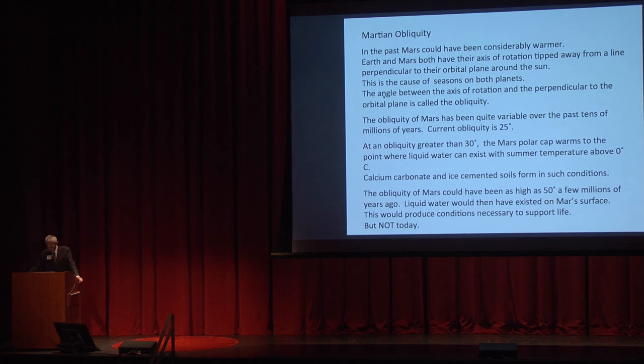At an obliquity of 30 degrees, meaning that the pole would be tipped more towards the sun, the polar regions could warm to a temperature above 0 degrees Celsius, 32 degrees Fahrenheit, so there could be liquid water on the surface of Mars. Calcium carbonate, these hydrated salts that we found on Mars, would form in such conditions. There's some evidence that the obliquity of Mars a few million years ago was as much as 50 degrees, which would have meant that the north pole is pointing much more directly towards the sun, and the whole region way down from the polar regions could be warm enough to have liquid water on Mars. So liquid water would then have existed, and conditions necessary to start life. But this is millions of years ago, not today, because today the angle is 25 degrees. Everything is frozen on the surface of Mars today.